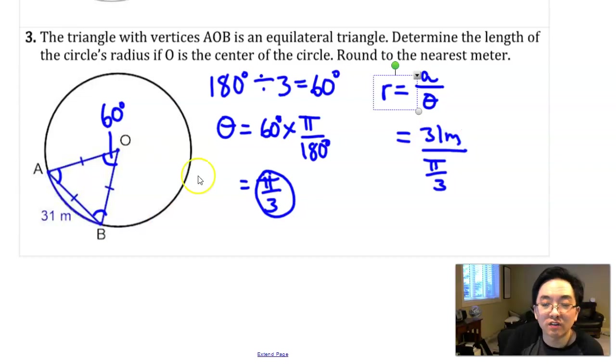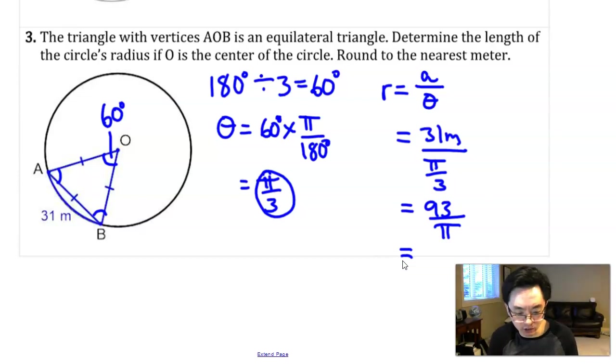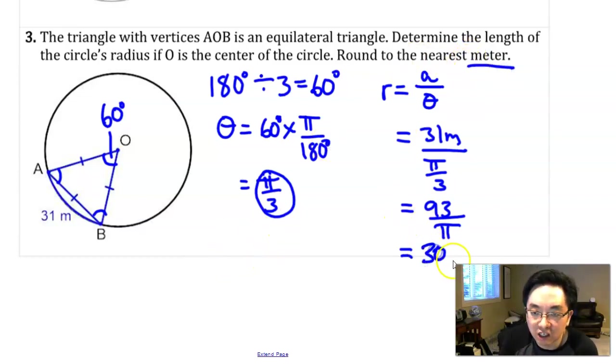It'll be 31 divided by pi over 3, which if you divide by this fraction is 93 over pi. At this point I'll go to my calculator and see what 93 divided by pi is. 29.6. It does say round to the nearest meter, so I will say 30 meters.